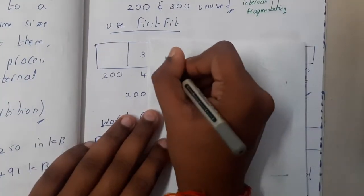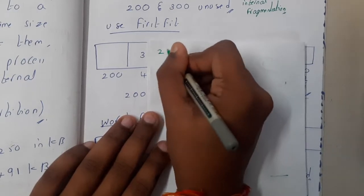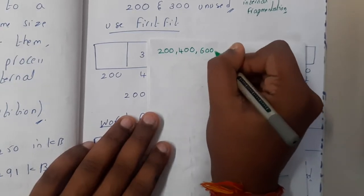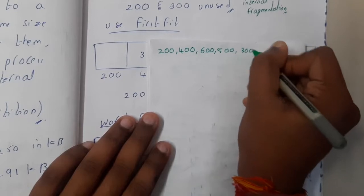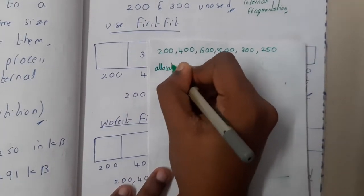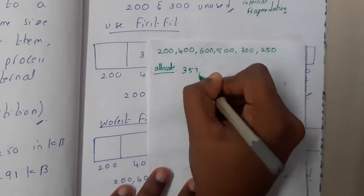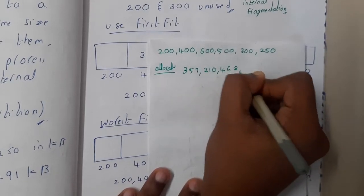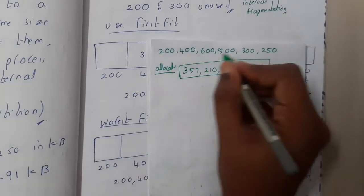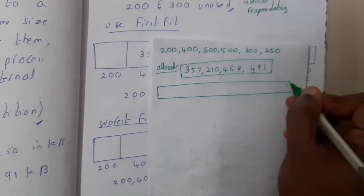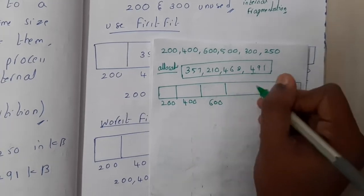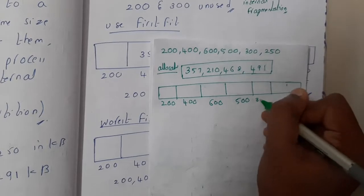So they are saying this is a fixed partitioning approach. The slots are of size 200, 400, 600, 500, 300, and 250. The data which we want to allocate — the four programs — are 357, 210, 468, and 491. We want to fit these programs inside those slot locations.